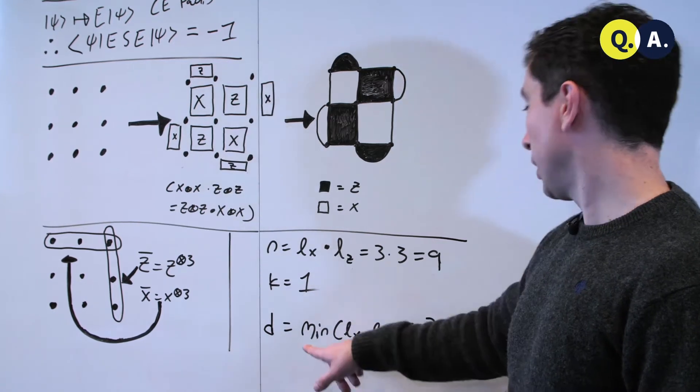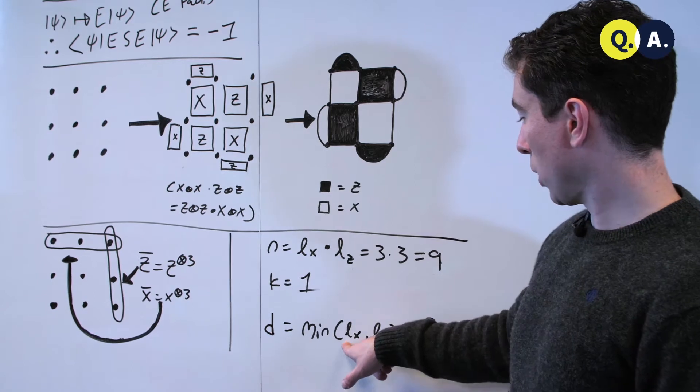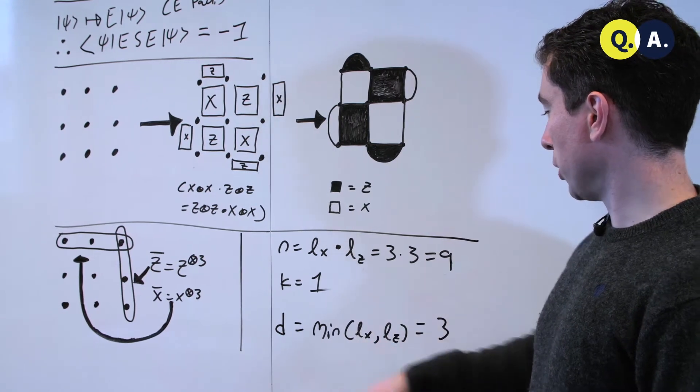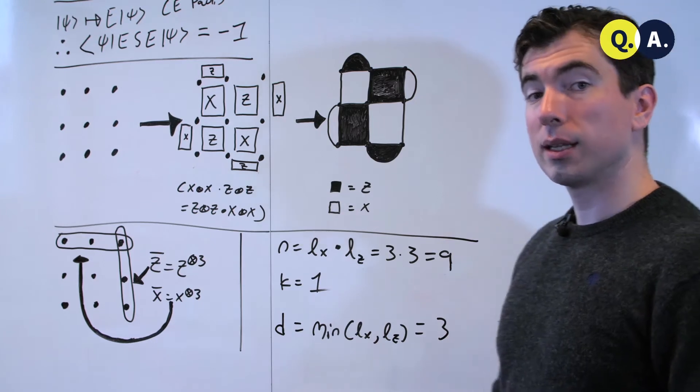And d, the code distance, is the minimum side length of this square, which is either lx or lz, whichever is smaller, the minimum, and in this case that's 3.